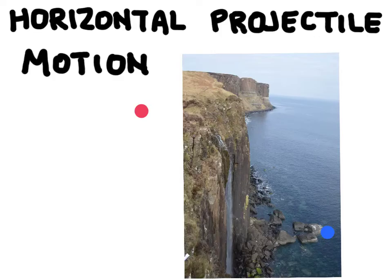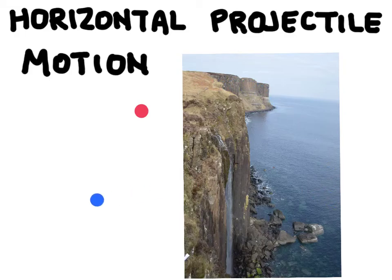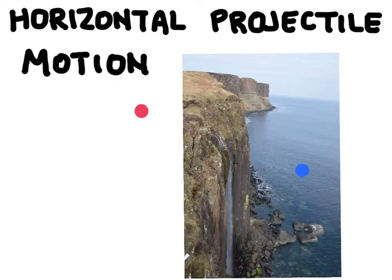Projectile motion is a term we use to describe the motion of an object that is moving both horizontally and vertically, but where the only thing causing acceleration is the force of gravity — that's going to be the vertical part. So we could have projectile motion of something rolling and then falling off, or we could have a situation like throwing a ball in an arc. Projectile motion only has an acceleration in the vertical direction because gravity is the only thing causing acceleration.